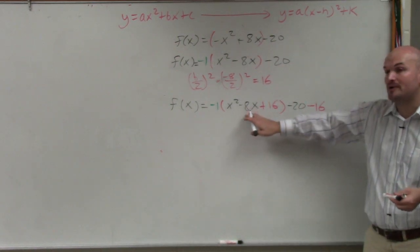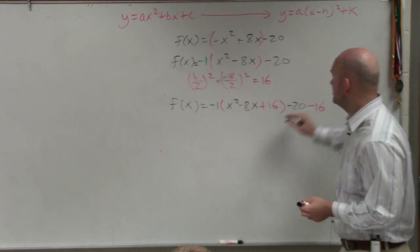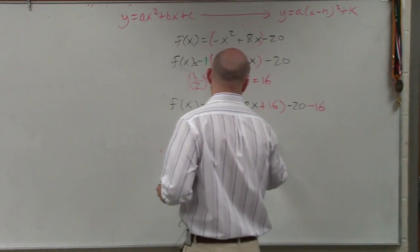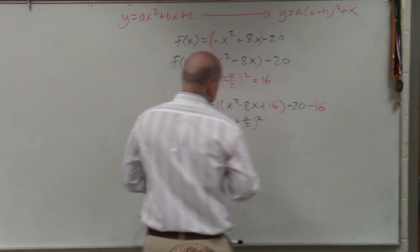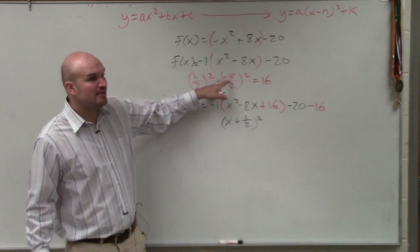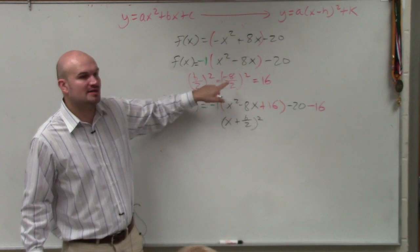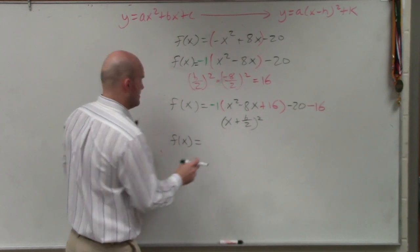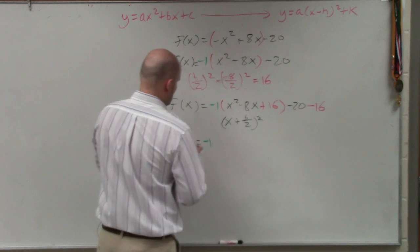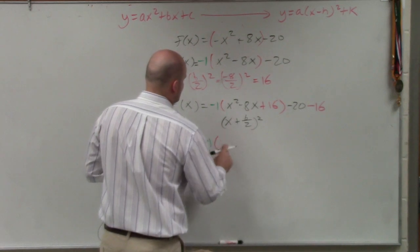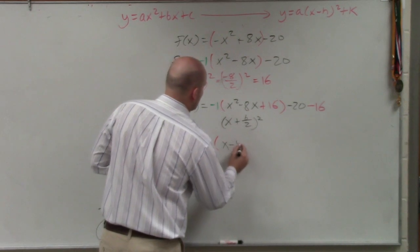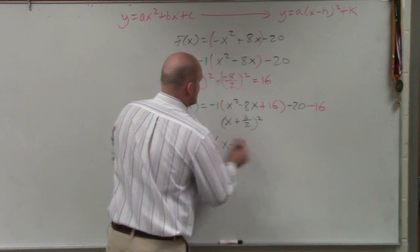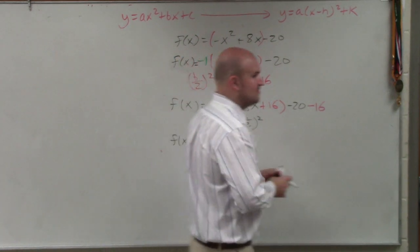Now we need to do our x plus b divided by 2 to factor this. So it's x plus b divided by 2 squared. So what was our b divided by 2? Negative 8 divided by 2 was negative 4. So I have f of x equals negative 1 parentheses x minus 4 squared.